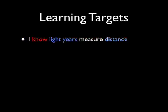Let's start with the learning targets. The first learning target is that you know light years measure distance. In order to know something, you need to be able to repeat it back, recall it, or retrieve the information. Light years is the amount of distance it takes light to travel in one year. Distance is the amount of space between two objects.